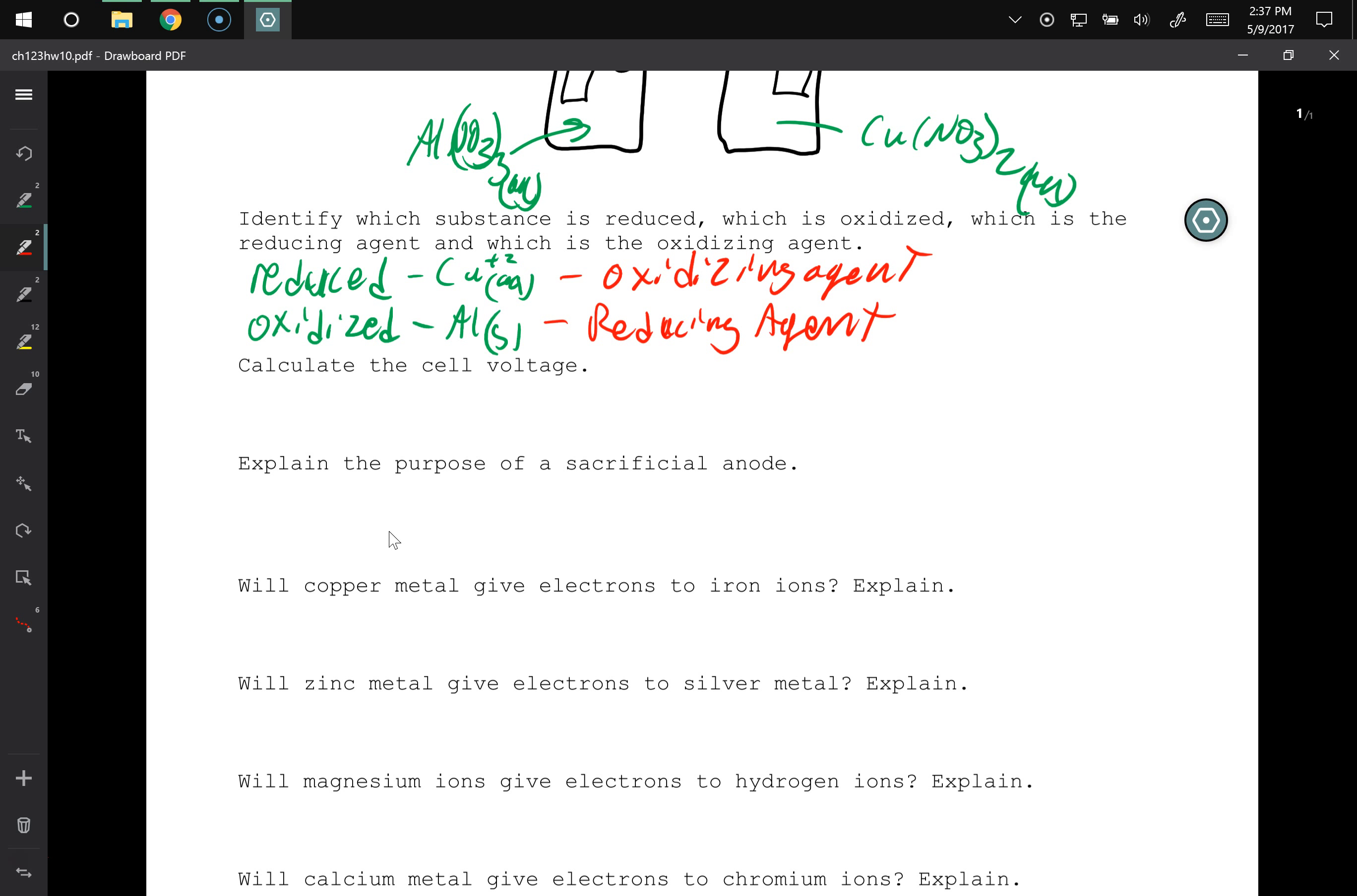So it's getting the aluminum to give up its electrons. So why is the aluminum the reducing agent? Say that second part first. So it's reducing the copper 2, right? So that aluminum metal is reducing that copper 2 to copper metal by giving it electrons, but it is doing the reducing. So that's what we're saying.